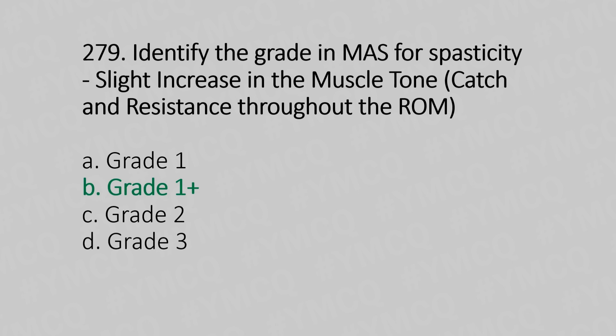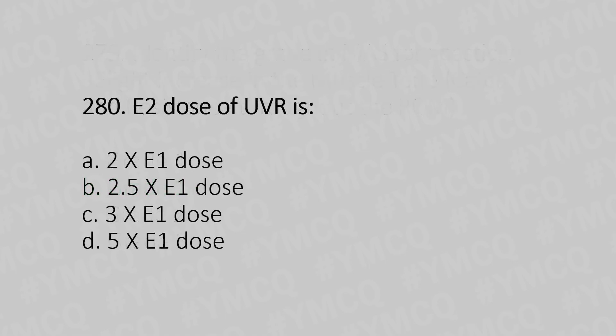Now let's move to question number 280. E2 dose of UVR is: Option A, 2 times the E1 dose; Option B, 2.5 times the E1 dose; Option C, 3 times the E1 dose; Option D, 5 times the E1 dose. And the answer is Option B, 2.5 times the E1 dose.